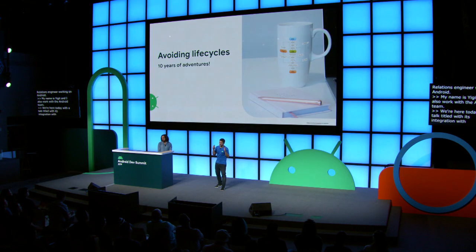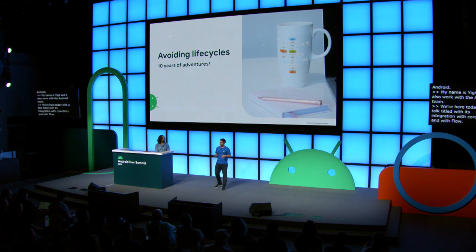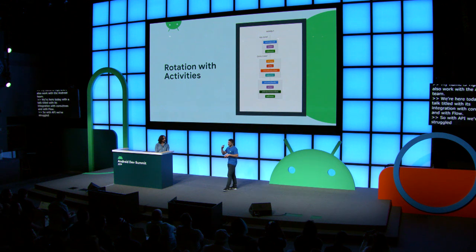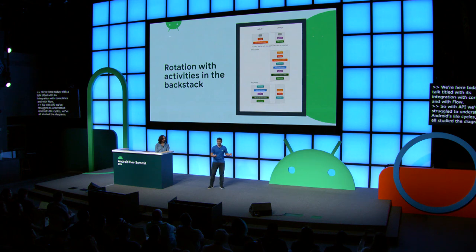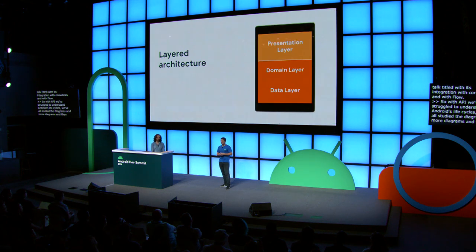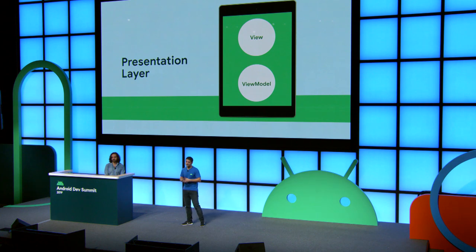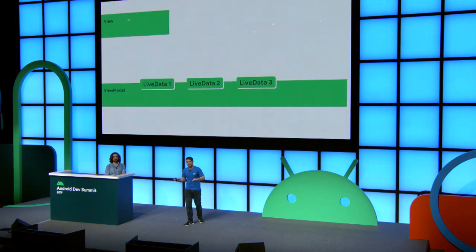Since API, we've struggled to understand Android life cycles. We've all studied the diagrams and more diagrams. And then fragments came along and generated more diagrams. We Android developers try to isolate ourselves from having to deal with this problem. We created a layered architecture in which only the presentation layer would know about the life cycle. And then even inside the presentation layer, we found some patterns and rules that work well, like having an object that would survive an activity or fragment recreation. We use this idea in the ViewModel class in Architecture Components.